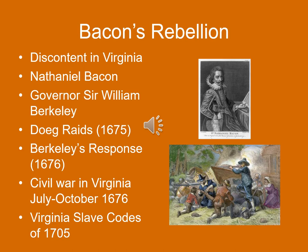Governor Berkeley refused to retaliate. Nathaniel Bacon raised a small militia anyway against the governor's wishes. They marched in and burned some Doeg villages and marched all the way into Maryland and attacked the Susquehannic too. Berkeley still refused to retaliate against the Doegs, and so Bacon launched a rebellion against the governor. It resulted in full civil war in Virginia from July to October of 1676. Bacon and his small army actually captured and burned Jamestown, the colonial capital, forced Governor Berkeley to flee. But in October of 1676, Bacon died of dysentery, and his rebellion disappeared.